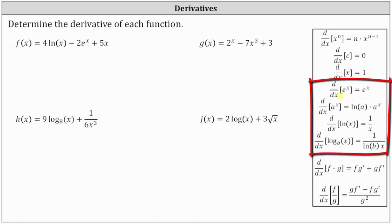The derivative of e to the x with respect to x equals e to the x. The derivative of a to the power of x with respect to x equals natural log a times a to the power of x. The derivative of natural log x with respect to x equals one divided by x. And finally, the derivative of log base b of x with respect to x equals one divided by the product of natural log b and x.